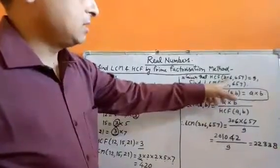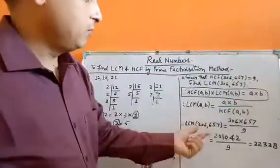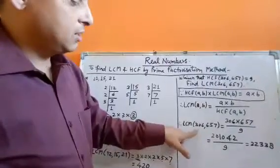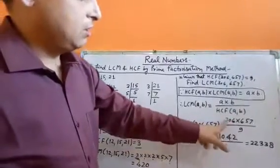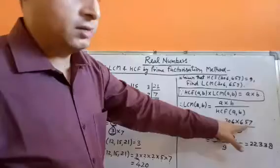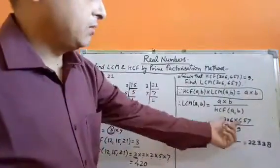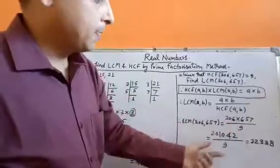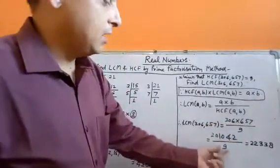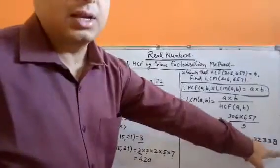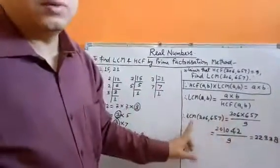Here A = 306 and B = 657. Therefore LCM(306, 657) = 306 × 657 ÷ HCF(306, 657). HCF is given as 9. So 306 × 657 ÷ 9 = 22,338. This is the required LCM of these two numbers.